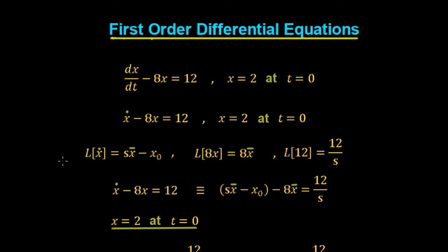We'll use what we've learned in the previous video to rewrite each of these terms — the x-dot, 8x, and the 12 — in terms of the Laplace domain variable s. The Laplace transform of x-dot equals s·X-bar minus x(0), meaning the Laplace transform of a derivative is s times the Laplace transform of the function minus the initial value. By linearity, the Laplace transform of 8x is 8 times X-bar, and the Laplace transform of 12 equals 12/s.